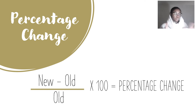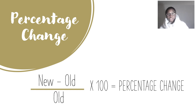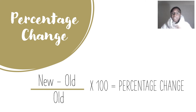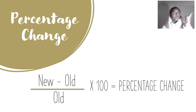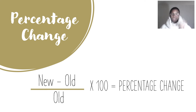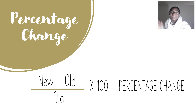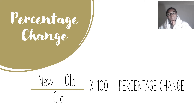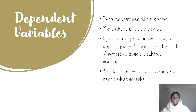Percentage change: the way I remember it is new minus old, over old, times by 100. So your new value take away your old value, divided by your old value, times by 100, equals your percentage change. They always ask that question, and because I always remember that formula I'm mostly getting it right.